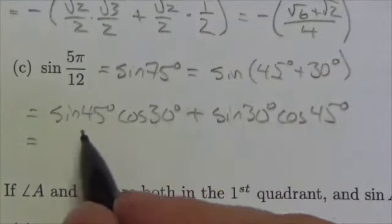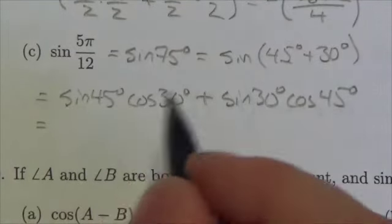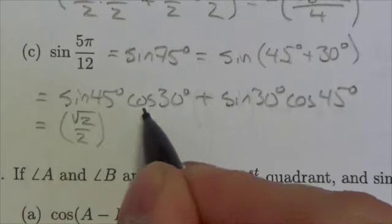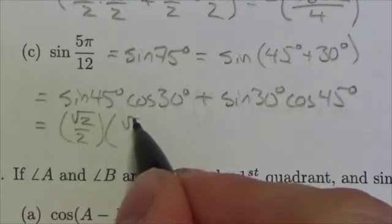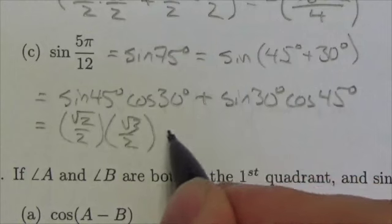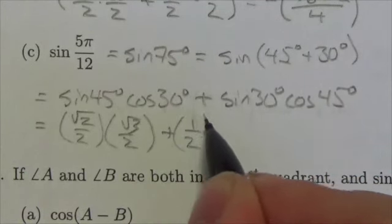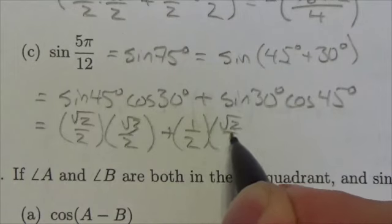And now we're just going to simplify and evaluate these things. Okay, the sine of 45, that's just going to be root 2 over 2. Cosine of 30 will be root 3 over 2. Plus, the sine of 30 is 1 over 2. And the cosine of 45 is root 2 over 2.